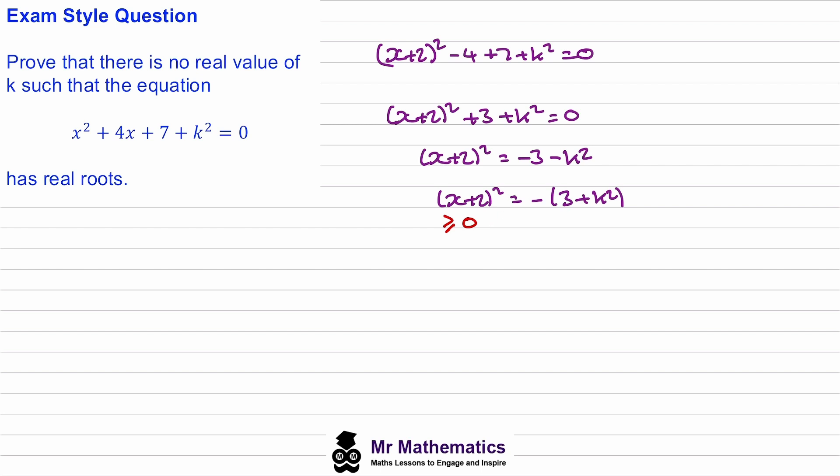If we look at the right hand side, we know k² must be greater than or equal to 0 for the same reason. When you add 3 to this, so 3 + k², this must always be greater than 0 because if you add 3 to that 0 it must be greater than that. Then when you negative 3 + k², this must therefore always be less than 0.